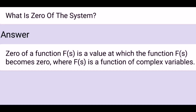What is a zero of the system? Zero of a function f(s) is a value at which the function f(s) becomes zero, where f(s) is a function of complex variables.